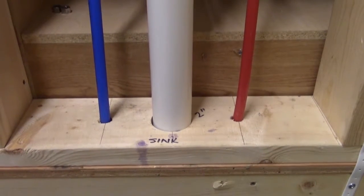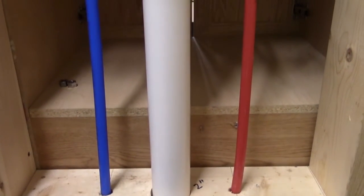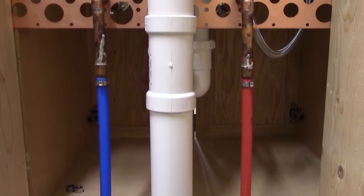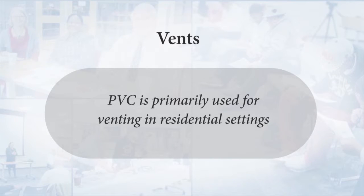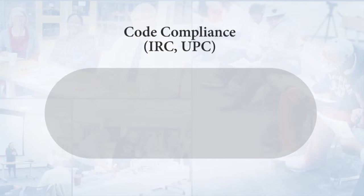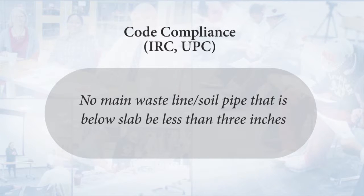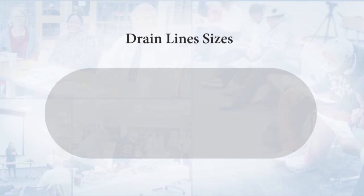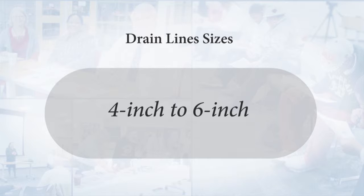Any type of waste system — a drain line, a main building drain line — has got to be properly vented. PVC, polyvinyl chloride, hard-walled thick-walled plastic pipe, is primarily used in a residential setting. The code compliance across the nation, which is your IRC and your UPC, requires that no main waste line or soil pipe below slab be less than three inches. Typically, most drain lines are sized at four through six inches, in both commercial and residential settings.